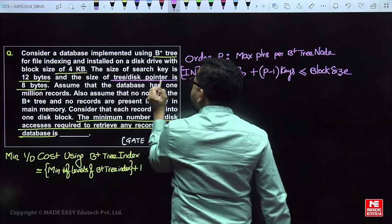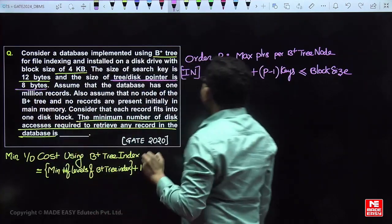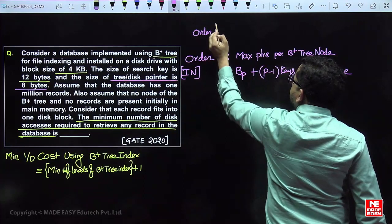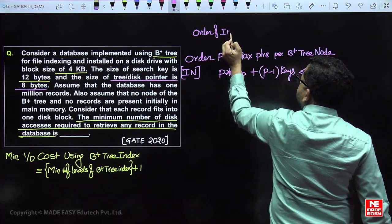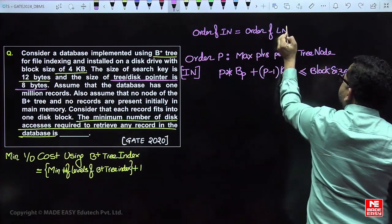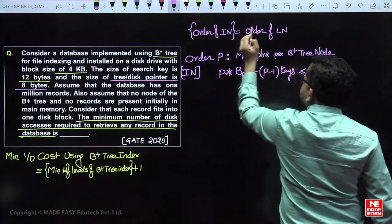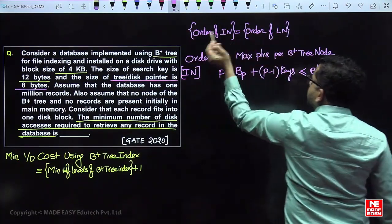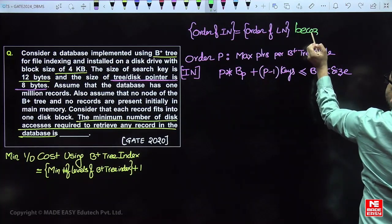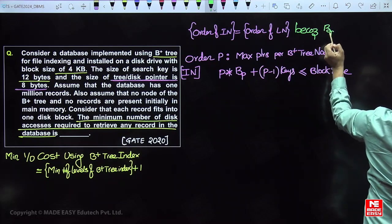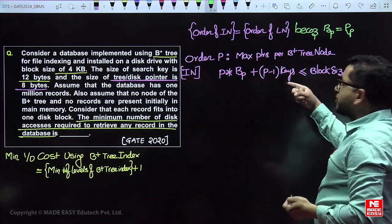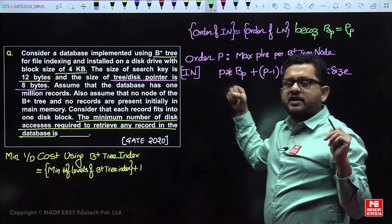The internal node order and leaf node order are the same because the block pointer and record pointer are both 8 bytes. Since block pointer size equals record pointer size, computing the internal node order or the leaf node order gives no difference.